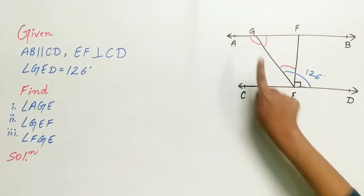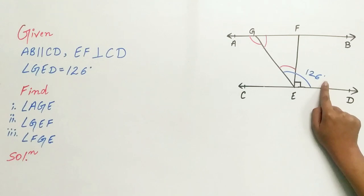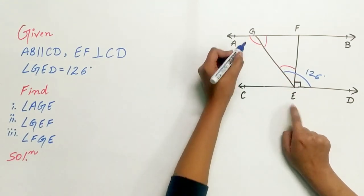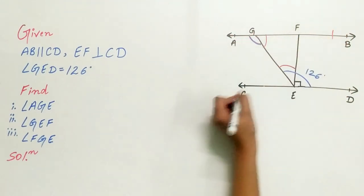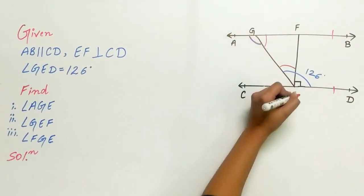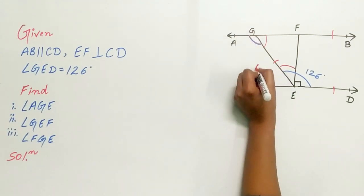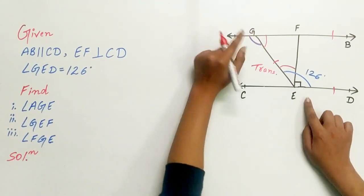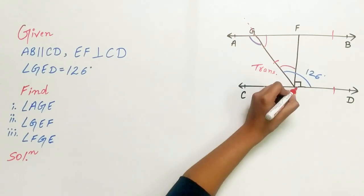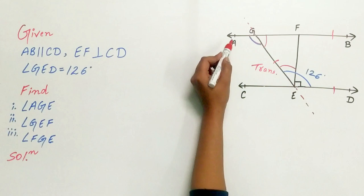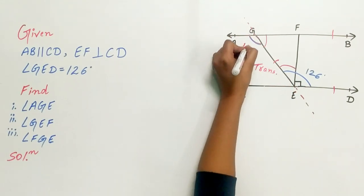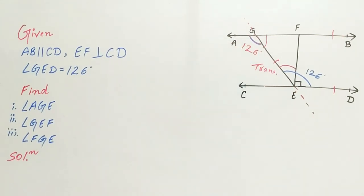Angle GED is 126 degrees. We have to find angle AGE. Now look carefully. AB is parallel to CD, and GE is a transversal. The transversal intersects the parallel lines. Angle GED is 126 degrees, so angle AGE is also 126 degrees.